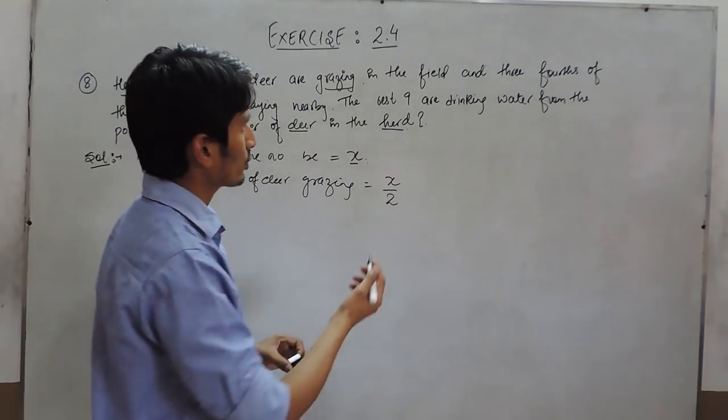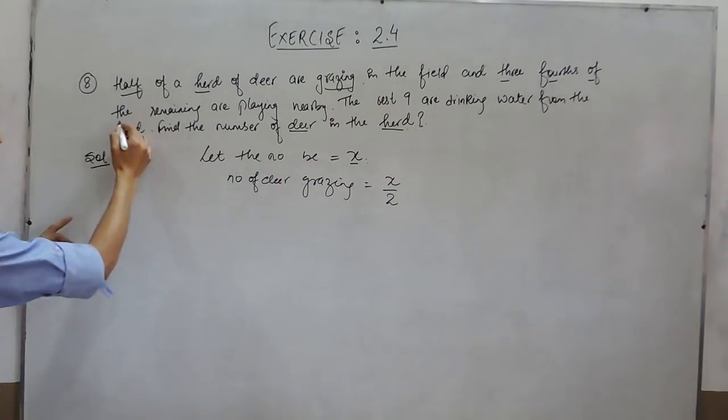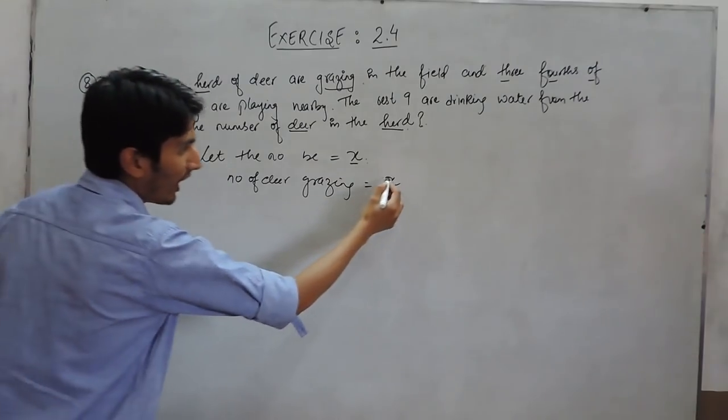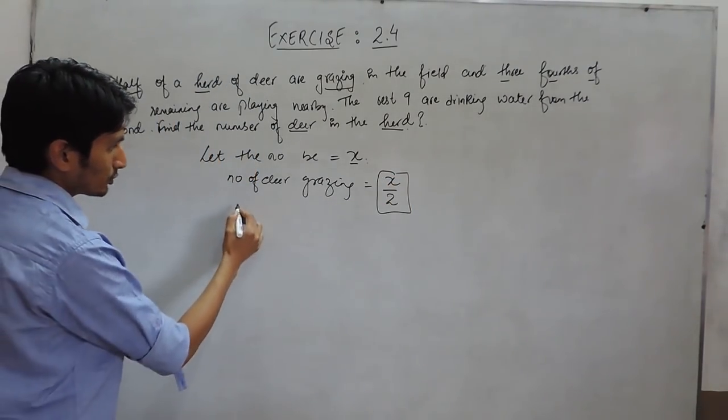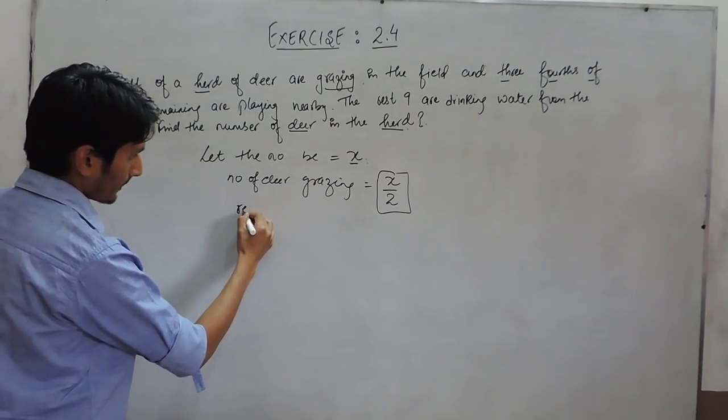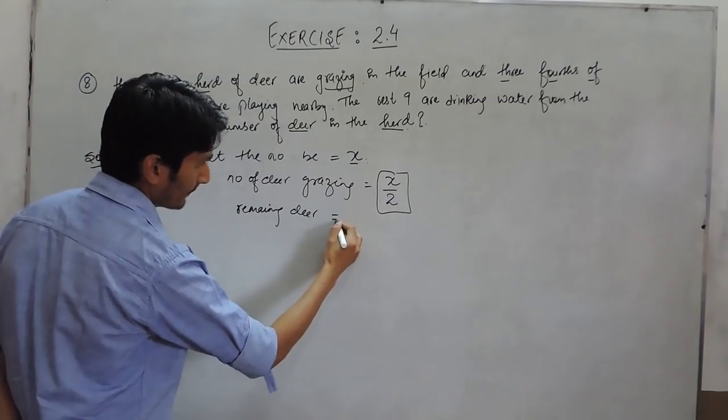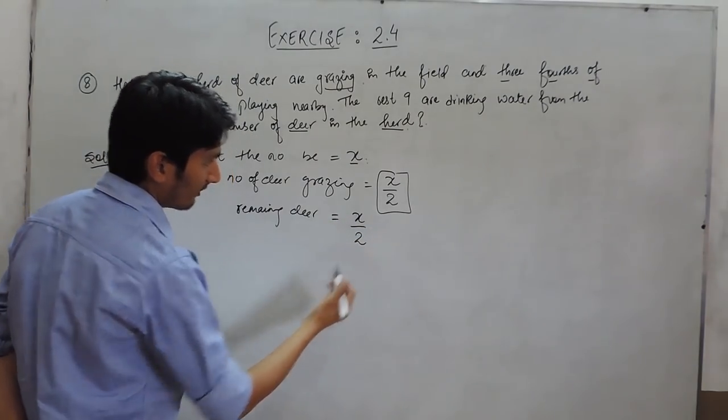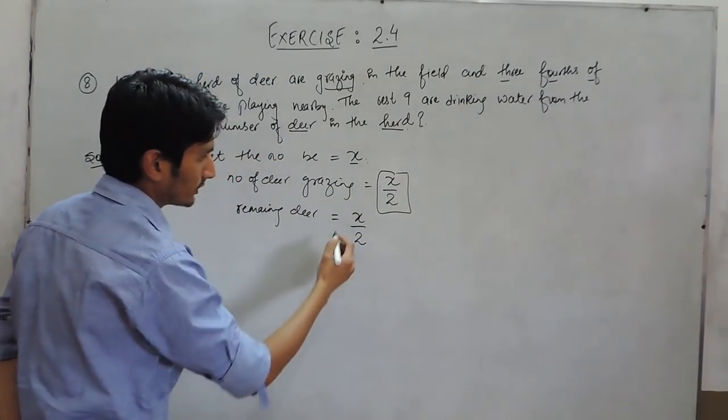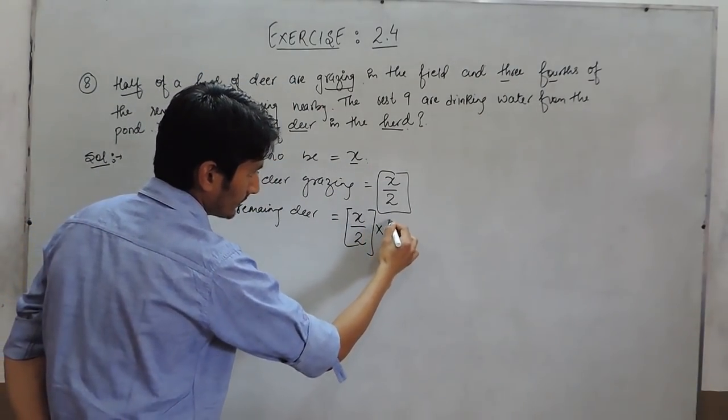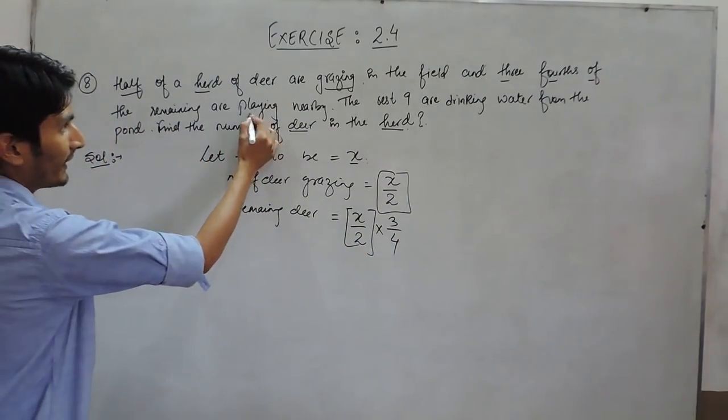In the next information, it is also given that 3/4th of the remaining... if half of the deer are grazing, then the remaining deer must be the remaining half. And it is given that 3/4th of this remaining are playing.